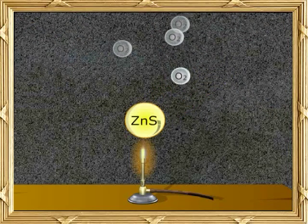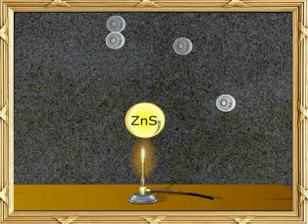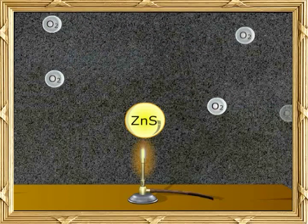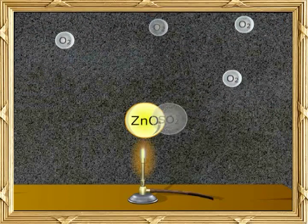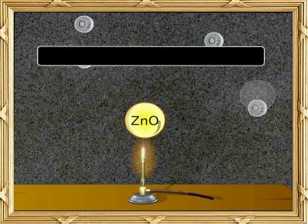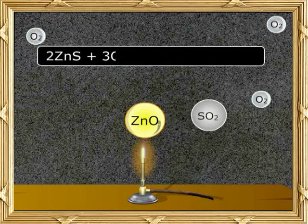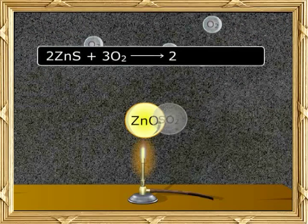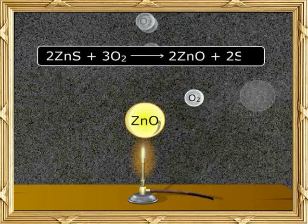Another method is burning metallic sulfides in oxygen. Zinc sulfide burns in oxygen to form zinc oxide and sulfur dioxide. The equation for this is 2ZnS plus 3O2 gives you 2ZnO plus 2SO2.